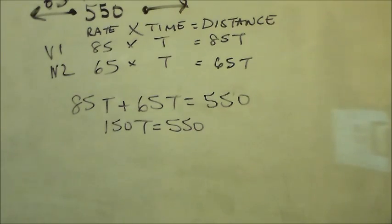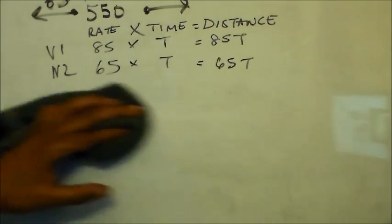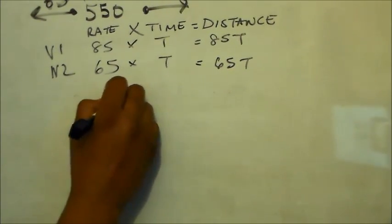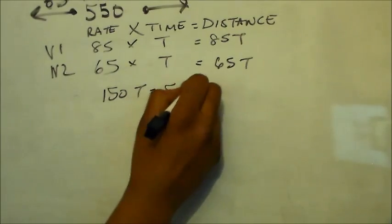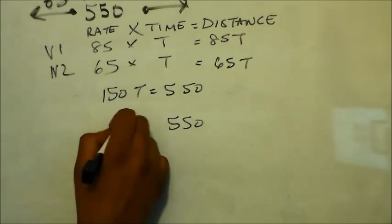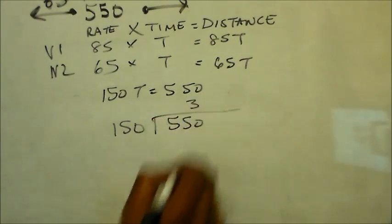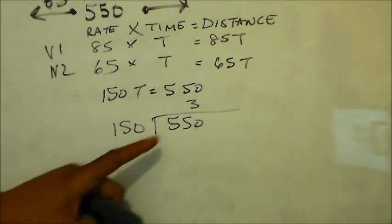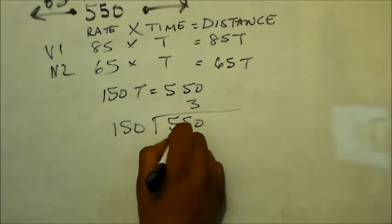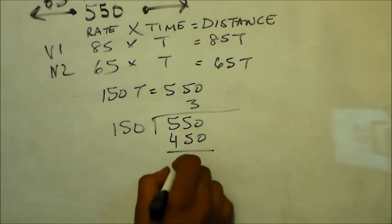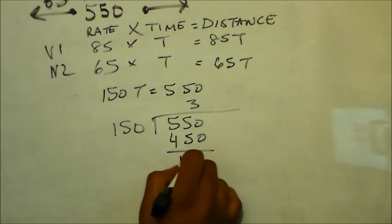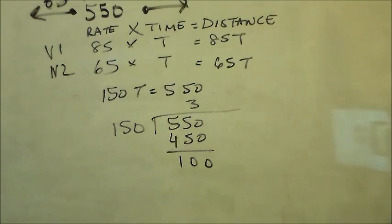If we add 85T and 65T, that becomes 150T. 80 plus 60 is 140, plus the two fives is 10, giving us 150. So 150T equals 550. Now I need to define T: 550 divided by 150. 3 times 150 is 450, which leaves 100.